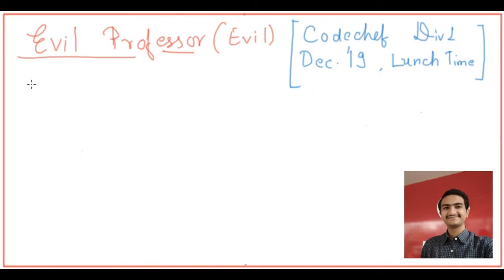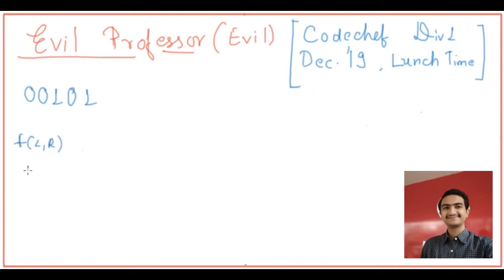In this question, we were given a string of length L consisting of 0s and 1s. A function f(l, r) is defined such that for each i where l ≤ i ≤ r, the i-th bit is flipped.